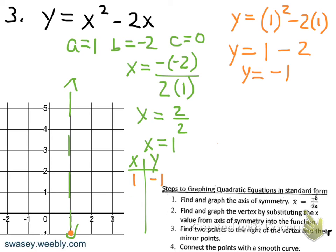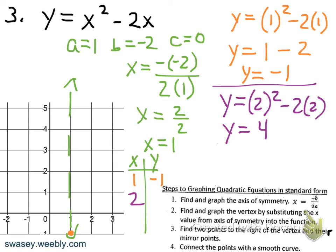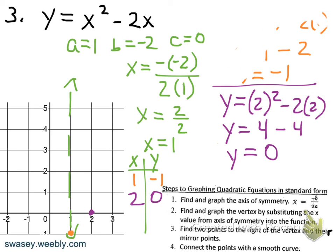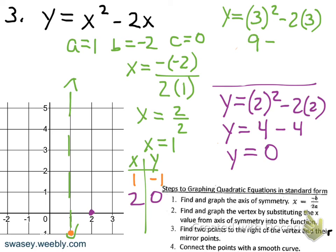Now let's pick values to the right of x equals 1. Putting in x equals 2: 2 squared is 4; negative 2 times 2 is negative 4; 4 minus 4 gives us 0. So we have a point at (2, 0). Then putting in x equals 3: 3 squared is 9; negative 2 times 3 is negative 6; 9 minus 6 gives us 3. So we have a point at (3, 3).